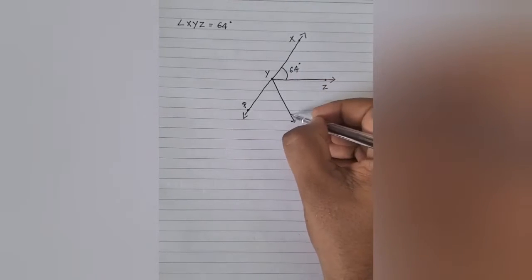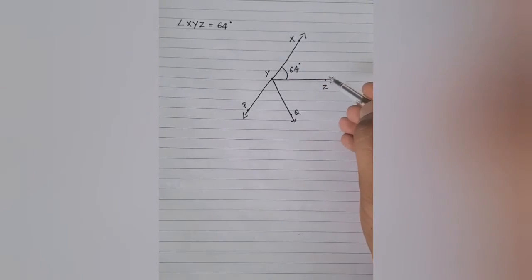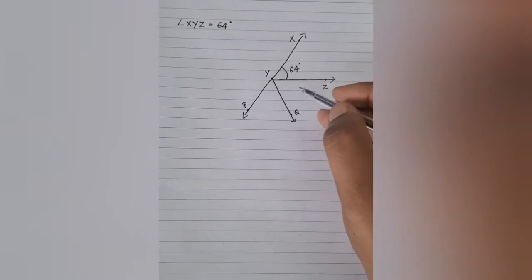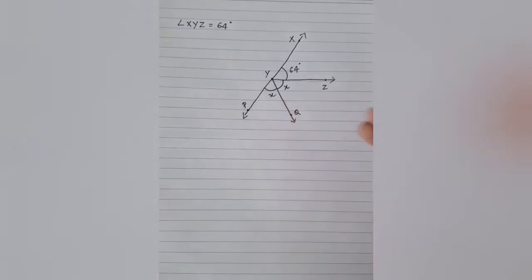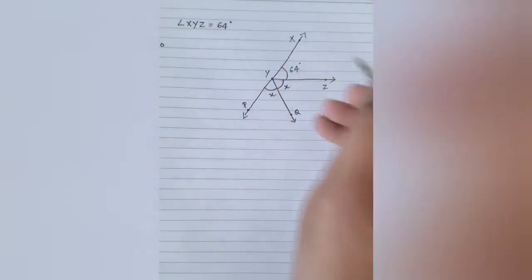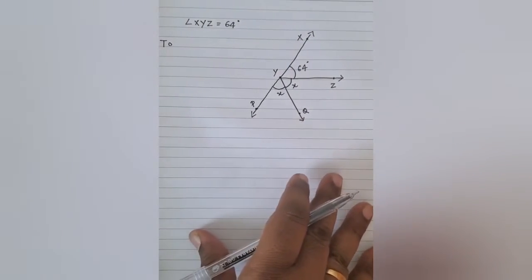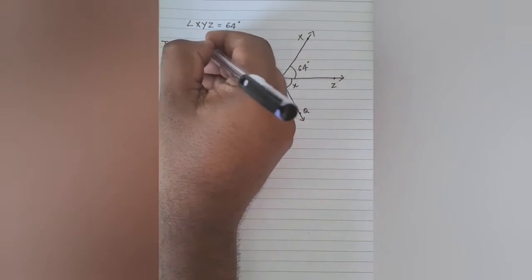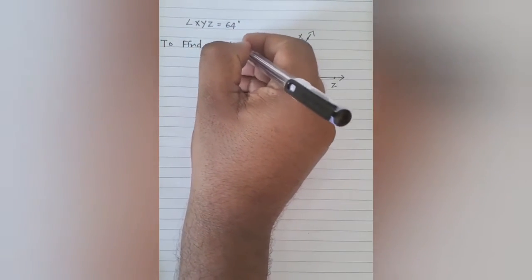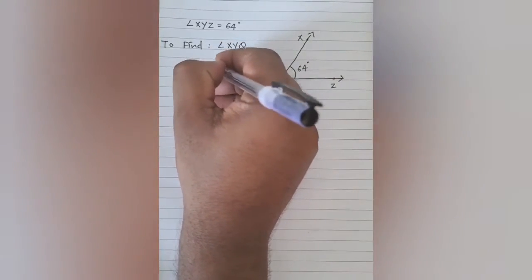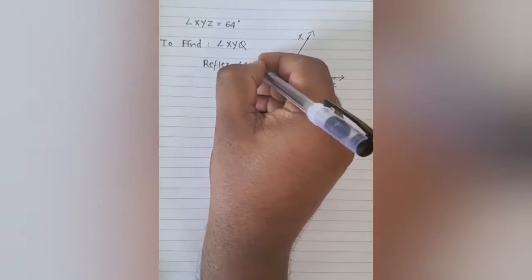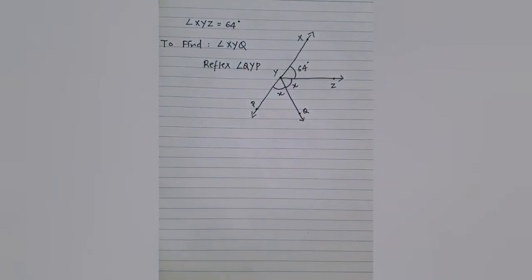In such a way, it has been mentioned that ray YQ will bisect angle ZYP. So bisect means two equal parts. So if this is x, the other part will also be equal to x. Now, what have been asked to find? We have been asked to find angle XYQ as well as reflex angle QYP.